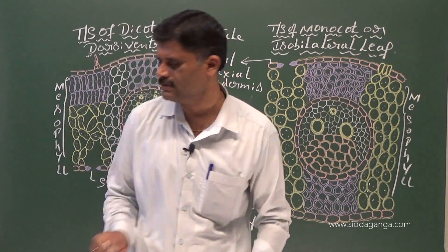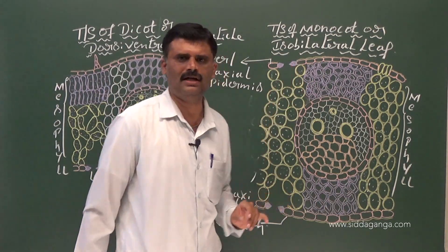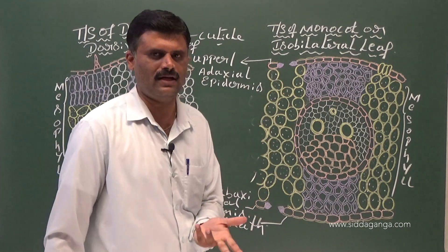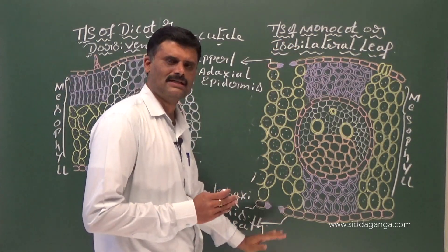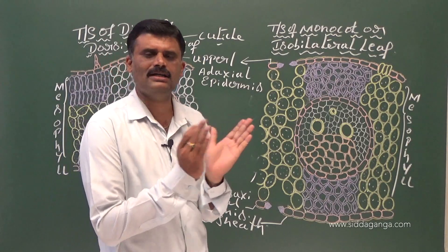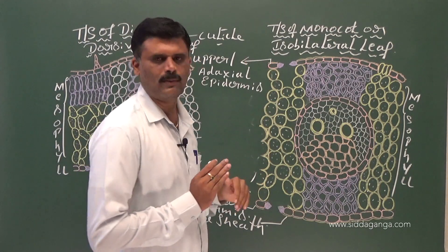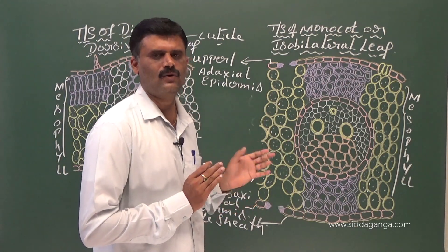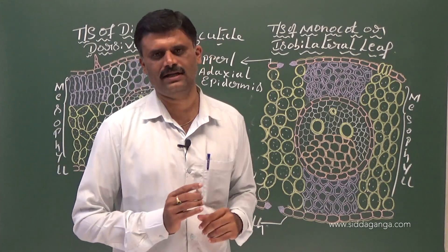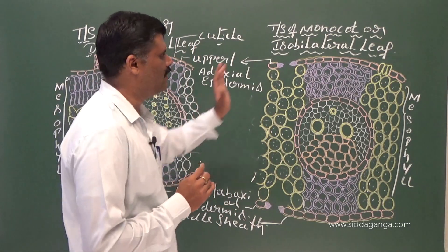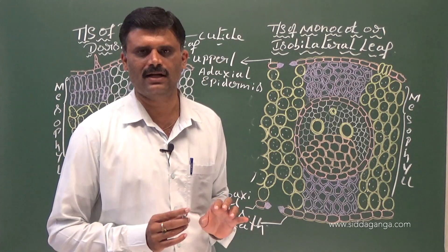The stomata is equally distributed on both surfaces. Both surfaces receive 6 hours of sunlight focus. Therefore, stomata are equally distributed on both the upper and lower surfaces. The monocot leaf is also called an amphistomatic leaf. Dicot leaf is hypostomatic; monocot leaf is amphistomatic, meaning both surfaces contain equal number of stomata.